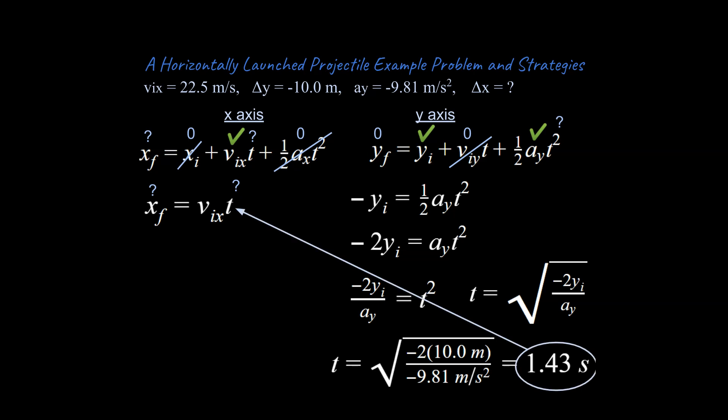And then based on that, we can take that time and plug it in over here for the x-axis. And then we plug in our values. I have to show some work over on top of some of the work because I'm running out of room. But we end up with an answer of 32.2 meters. That's how far in front of the swimming pool the plane needs to drop the stunt dummy. And that's how to do your first projectile problem.